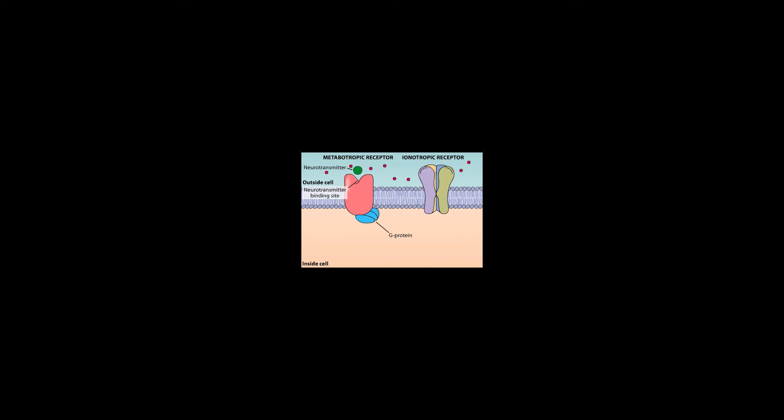Metabotropic receptors have an extracellular domain containing a neurotransmitter binding site and an intracellular domain that binds to G-proteins. The G-protein has three subunits: alpha, beta, and gamma. The alpha subunit binds to guanine nucleotides, either GTP or GDP. Binding of GDP allows the alpha subunit to bind beta and gamma subunits to form an inactive trimer. When an extracellular signal activates the metabotropic receptor, GDP is replaced with GTP on the alpha subunit, the G-protein becomes activated, and the alpha subunit dissociates from the beta-gamma complex. Both the GTP-bound alpha subunit and the free beta-gamma complex can then bind to downstream effector molecules that mediate a variety of responses in the target cell.